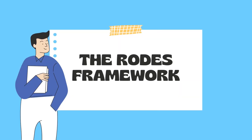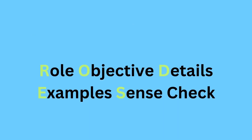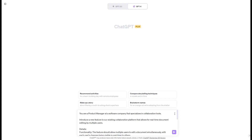I am going to explain another prompting framework called ROADS. ROADS stands for Role, Objective, Details, Examples, and Sense Check. This prompting technique should be used when you have examples similar to your desired output. Let's say we are in charge of product management at a software company, and we want to introduce a new tool that would enable our team to work simultaneously on shared documents. Here's how we would structure this prompt.